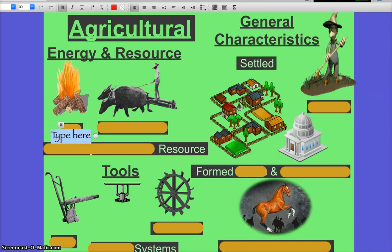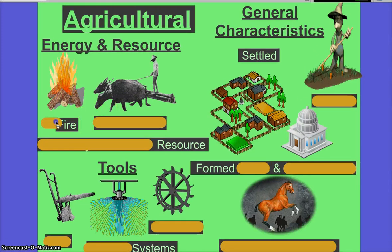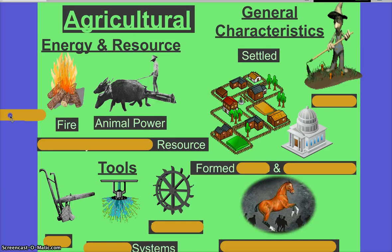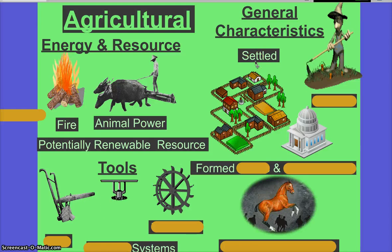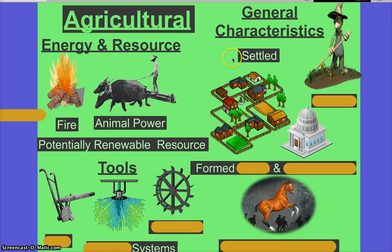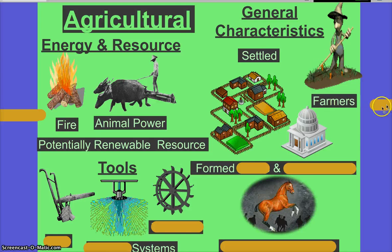Our next society is agricultural society. Give me anything on the page. Fire — what else? Animals — good. So they switched from manpower to animal power. What kind of resource are we talking about now? It's still renewable, but because we settled, we are now utilizing more resources in one area of land — not moving on, not giving it a chance to regenerate — so they're potentially renewable.